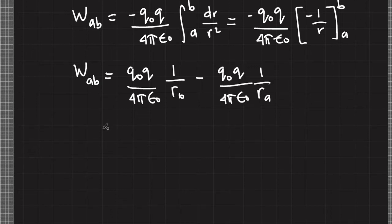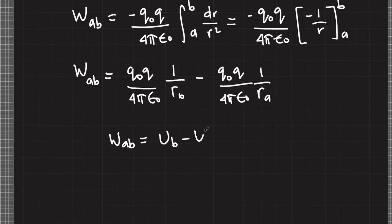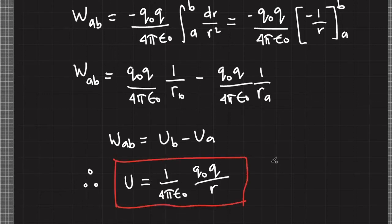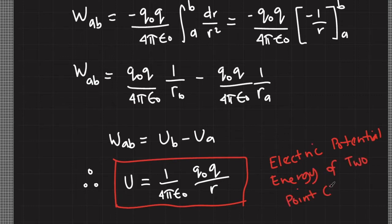From classical mechanics, when we have a conservative force like gravity, the work done on an object is equal to its change in potential energy. Therefore, each quantity here is actually equal to a potential energy, since the electrostatic force is actually a conservative force.